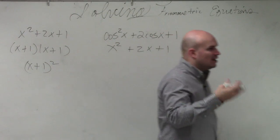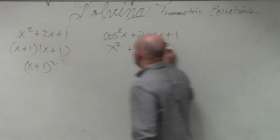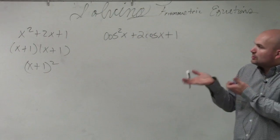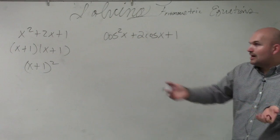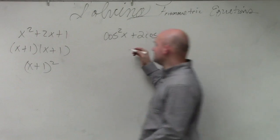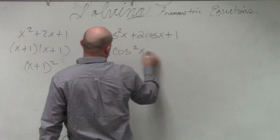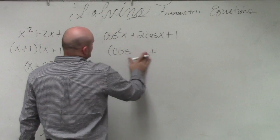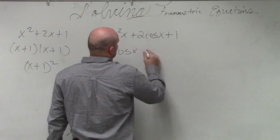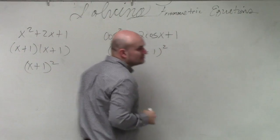Well, since I did all this work and I factored, I replaced cosine of x with x. Now, since I factored it, I can just replace this back with cosine of x. Cosine of x plus 1 squared. Done.